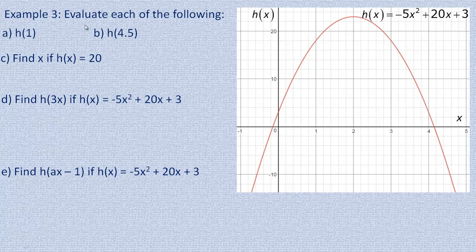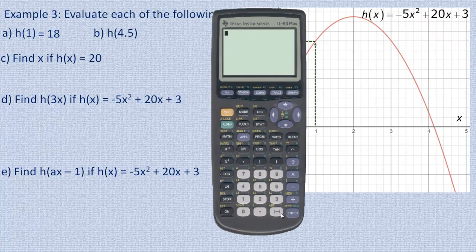On the last page we evaluate using both the graph and the function. The first question asks to find h of 1. On the graph, x equals 1, so we go up to where the graph exists above that point and read across — it looks like h of 1 is about 18. Checking with the function: negative 5 times 1 squared plus 20 times 1 plus 3 gives exactly 18. That confirms the graph reading.